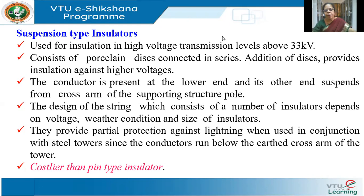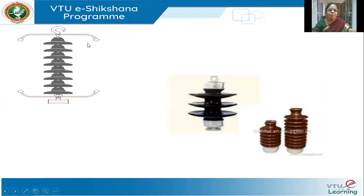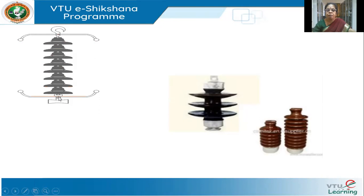Compared to pin insulators, these are more expensive. You can see suspension insulators with different numbers of discs — one with three discs, another with eight discs. If I want a higher voltage level, I can simply add more discs. The top portion is supported by the cross arm of the pole, and the bottom portion carries the conductor.